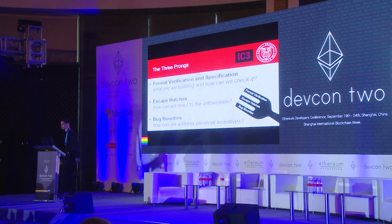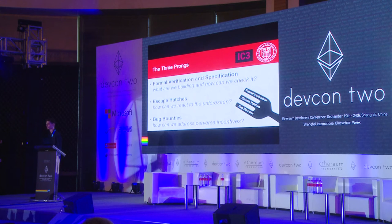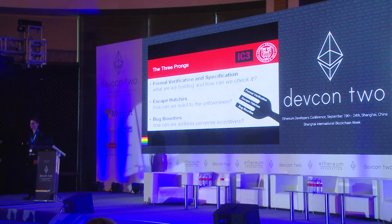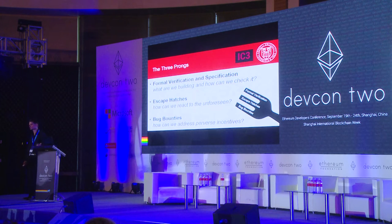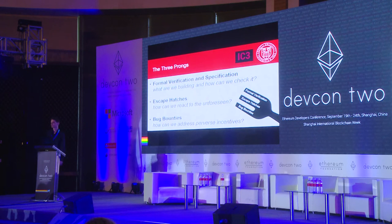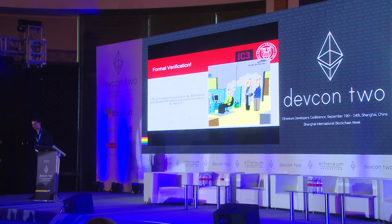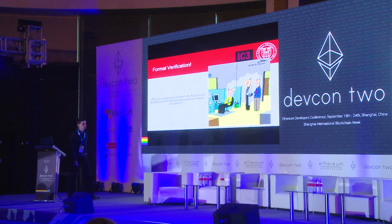How do we start tackling this pretty difficult problem? As far as we see it there are three prongs that will help us stick a fork in this problem with smart contract correctness and security. The first one is formal verification and specification, the second one is escape patches — otherwise known as kill switches — and the last one is bug bounties.